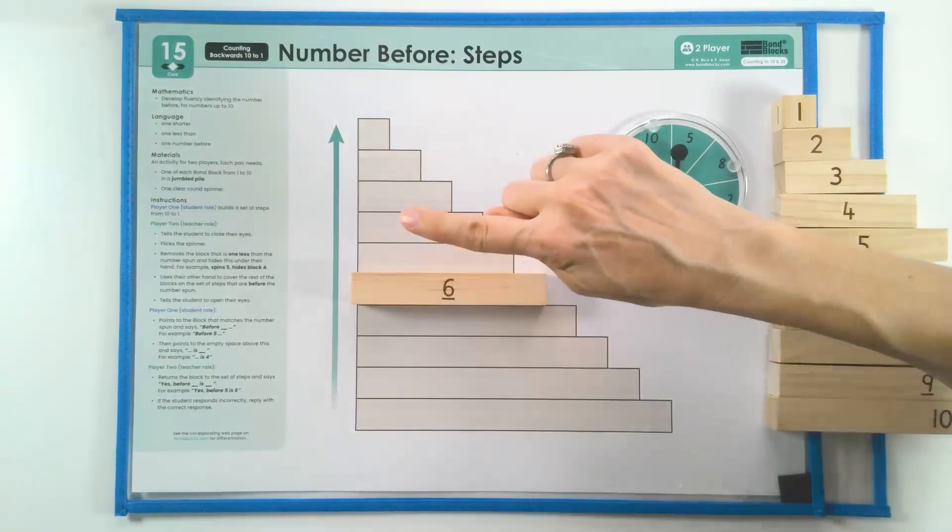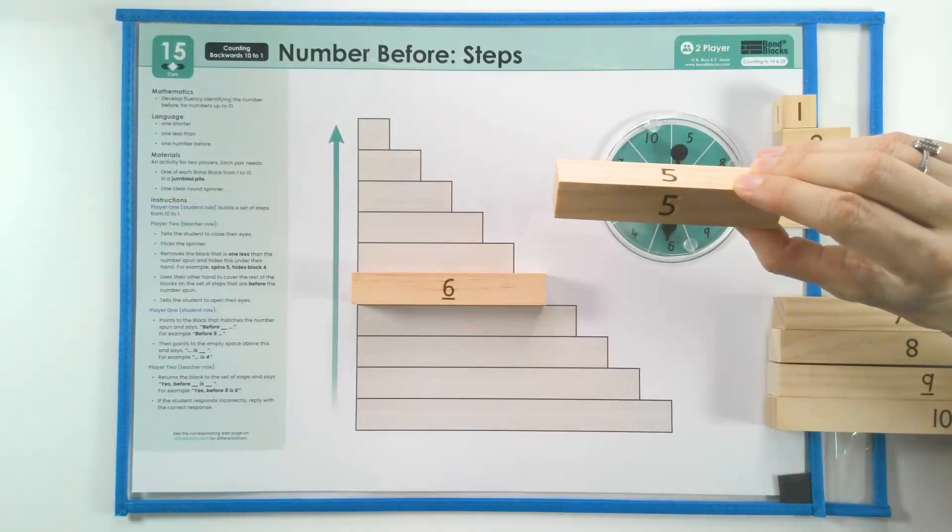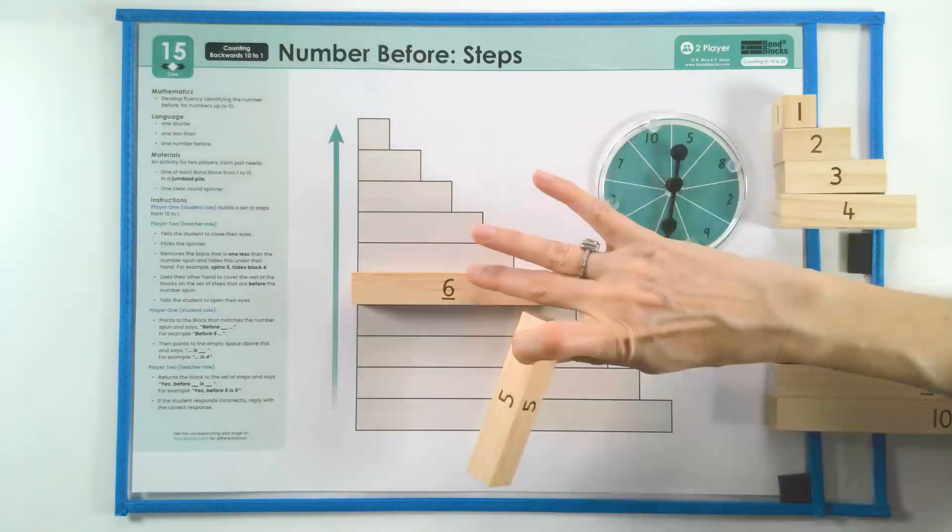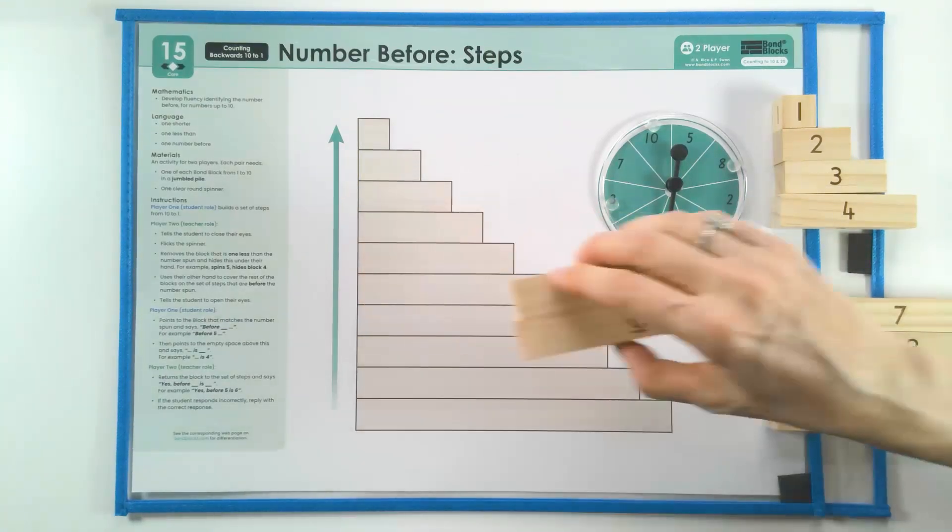Before six, two more words, is five. I will pick up the five block and check and say yes, before six is five. Let's go.